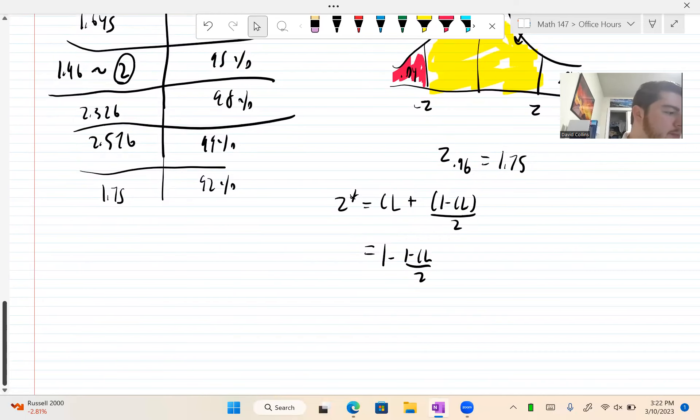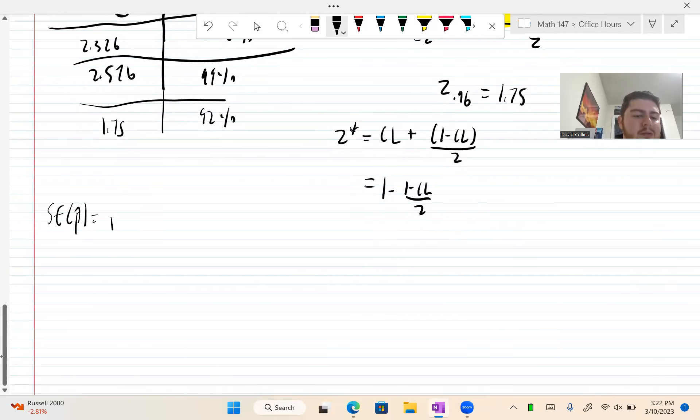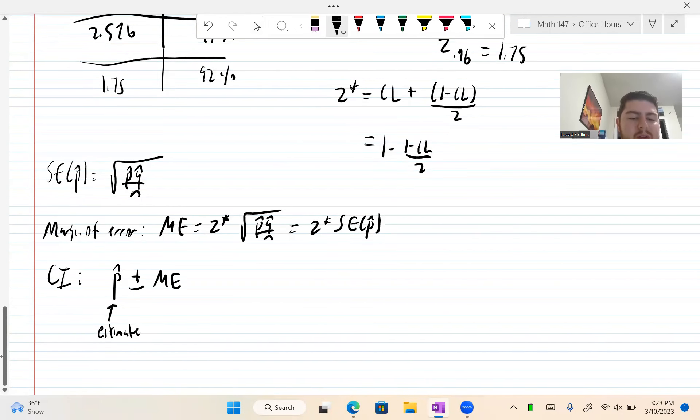So now we have everything we need to make a confidence interval. We have our standard error of p-hat, which is square root p-hat q-hat over n. And then we have what's called our margin of error, we call it ME. It is our Z-critical times p-hat q-hat over n, which is Z-critical times standard error of p-hat. Now our confidence interval is our p-hat, this is called our estimate, plus minus our margin of error. So the full equation is p-hat plus minus Z-critical square root p-hat q-hat over n.